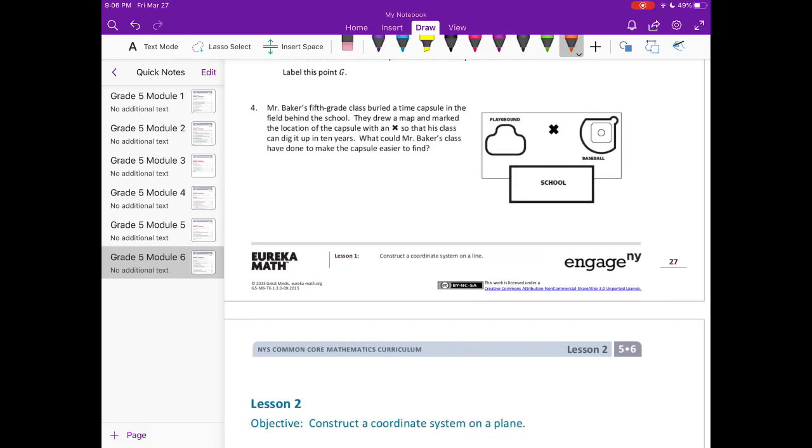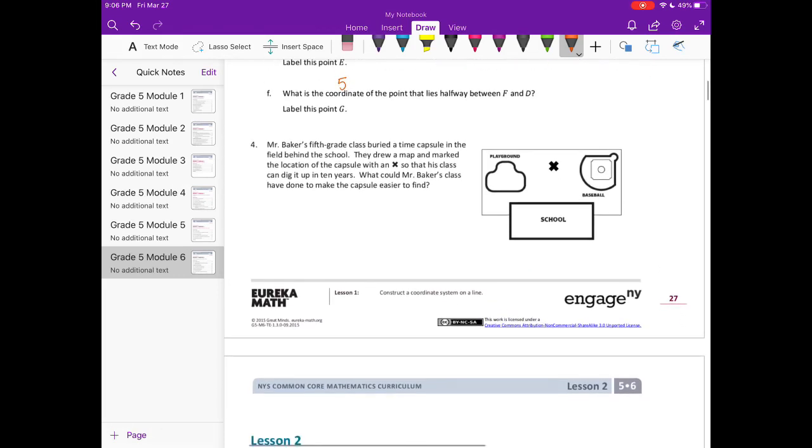But what I think they could have done to make it easier is they could have added coordinates so that there was an exact location or a measurement of where the capsule was. There are other answers. That's not the only answer. Maybe you have an idea that's better than mine. But considering this is all about coordinates, it's probably what your teacher is looking for. So we could say they could have labeled the map with coordinates that gave an exact location.